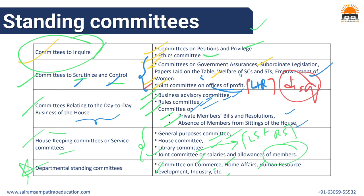To summarize standing committees: they are permanent bodies that start at the beginning of a session and continue to work till the end of the session. Their tenure is up to one year maximum. Their major goal is policy making and public administration - they help the parliament in making laws. These were the different types of standing committees.